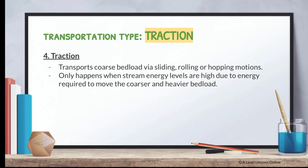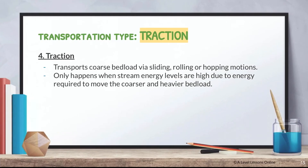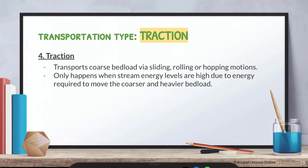Traction is the simplest of all — when materials are feeling lazy, they basically just roll along the river bed. It only happens when stream energy levels are extremely high, in order for the coarse bed load to move. Traction transports coarse bed load via a sliding, rolling, or hopping motion along the river bed.